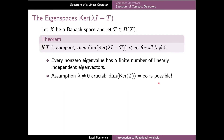The easiest case where this happens is when T is the zero operator on an infinite dimensional space, in which case every nonzero vector on the space is an eigenvector corresponding to the zero eigenvalue.